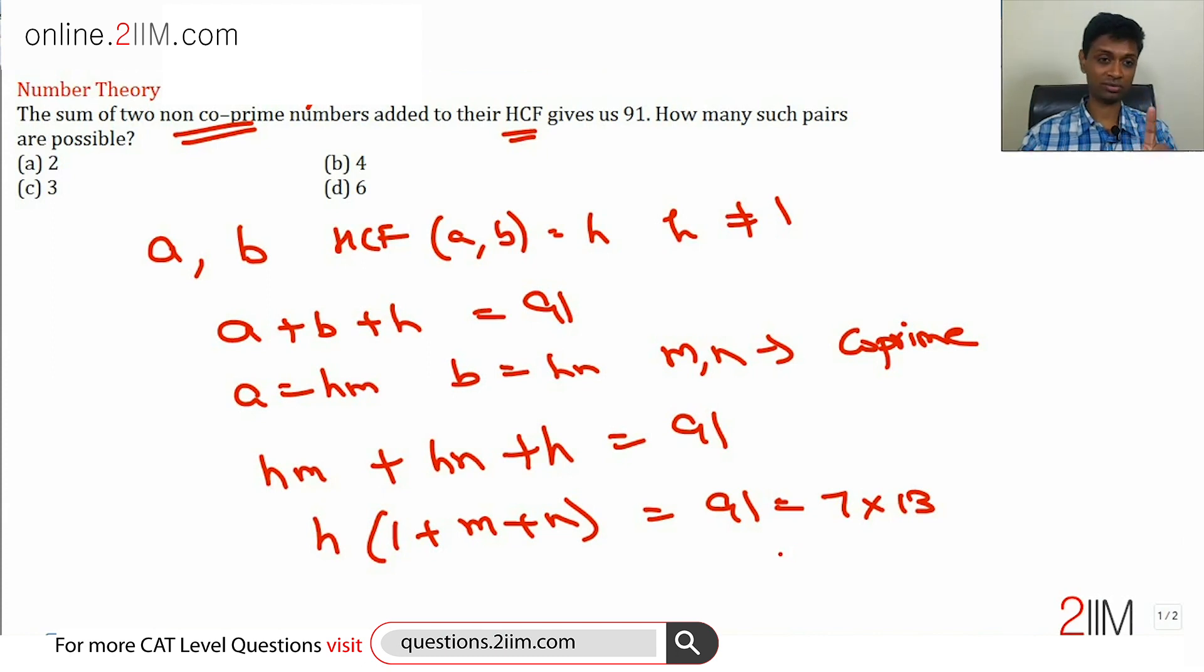Now HCF, these two numbers cannot be 1 because they are not coprime. So straight away, we know that 1 into 91 is ruled out. I am going to write down all four possibilities.